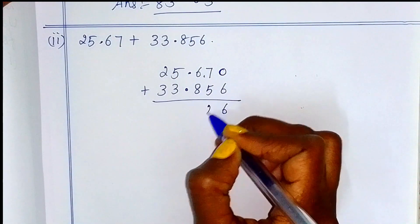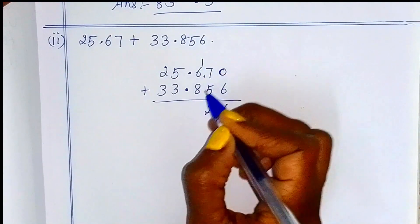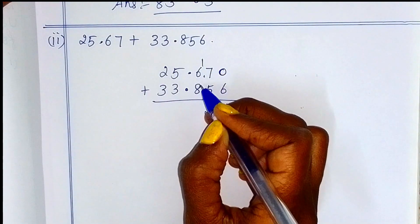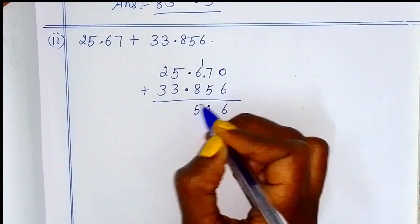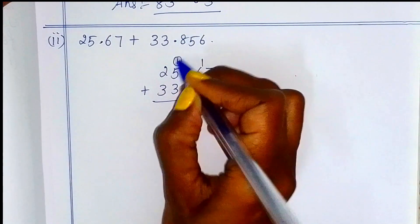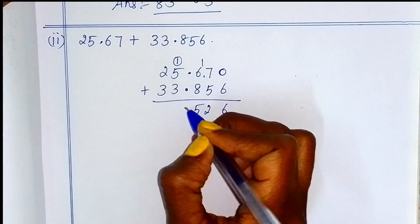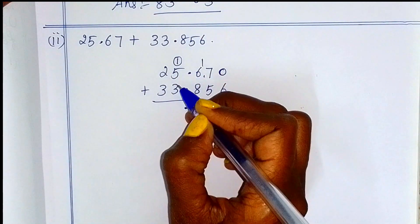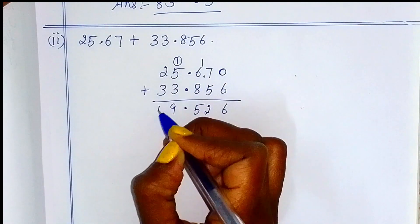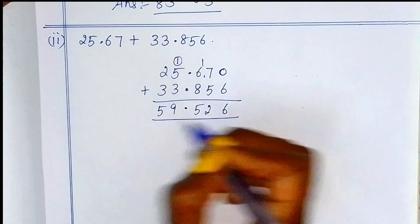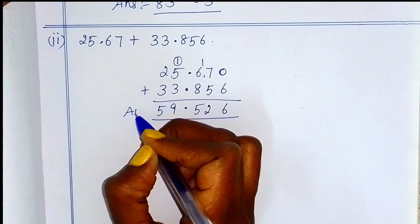7 plus 5 is 12, 1 carry over. 8 plus 1 is 9, then 15, so 1 carry over. Decimal point, we can add. So the answer is 59.526.